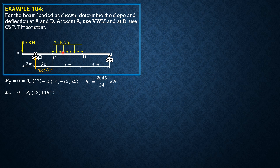Summation of moments about B equals zero: R_E times 12 plus 15 times 2 minus 25 times 5 times 5.5 equals zero, so R_E equals 1315 over 24 kilonewtons. There will be four segments; these are the chosen sections — you can make your own as long as the answers are the same.